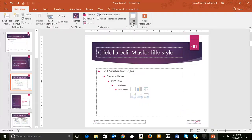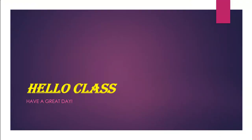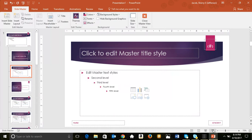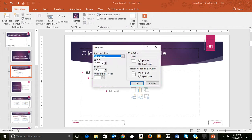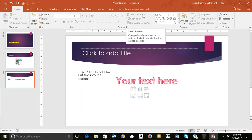In the Slide Size area you can set a custom slide size, specifying your own height and width. You can also set slides to portrait or landscape orientation, and set your notes, handouts, or outline to portrait or landscape as well. That covers Slide Master view, found in the View tab.